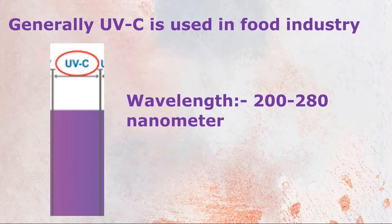Depending on the wavelength, ultraviolet rays can be divided into 3 divisions. First, Ultraviolet A, responsible for skin tightening. Second, Ultraviolet B, which is harmful and can cause skin cancer. Third, Ultraviolet C, which is germicidal and helps in the inactivation of microorganisms. Generally, Ultraviolet C is used in the food industry, and they range from a wavelength of 200 to 280 nanometers.